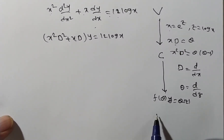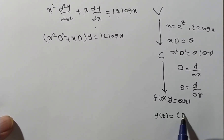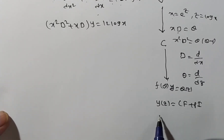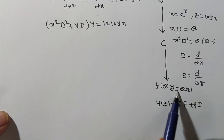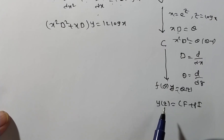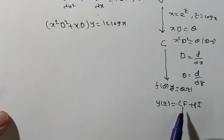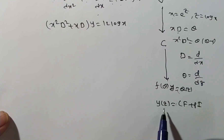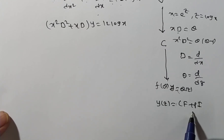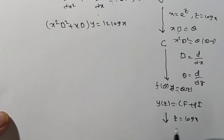The general solution y(z) equals complementary function plus particular integral. The complementary function comes from setting Q(z) = 0 and solving the auxiliary equation for roots. Both the complementary function and particular integral will be in terms of z, and in the final solution we replace z by log(x) to get the solution in terms of x.